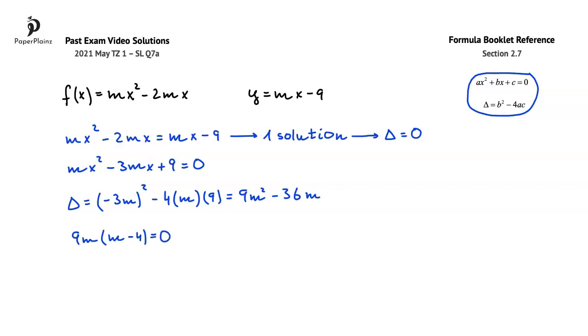From here, using the null factor law, or simply the fact that 9m times m minus 4 is equal to 0, we can write that m must either be 0, or m must be equal to 4. So, one of our solutions here for m is 4, and this is what we wanted to show, but we still have to explain why m equals to 0 does not work here.